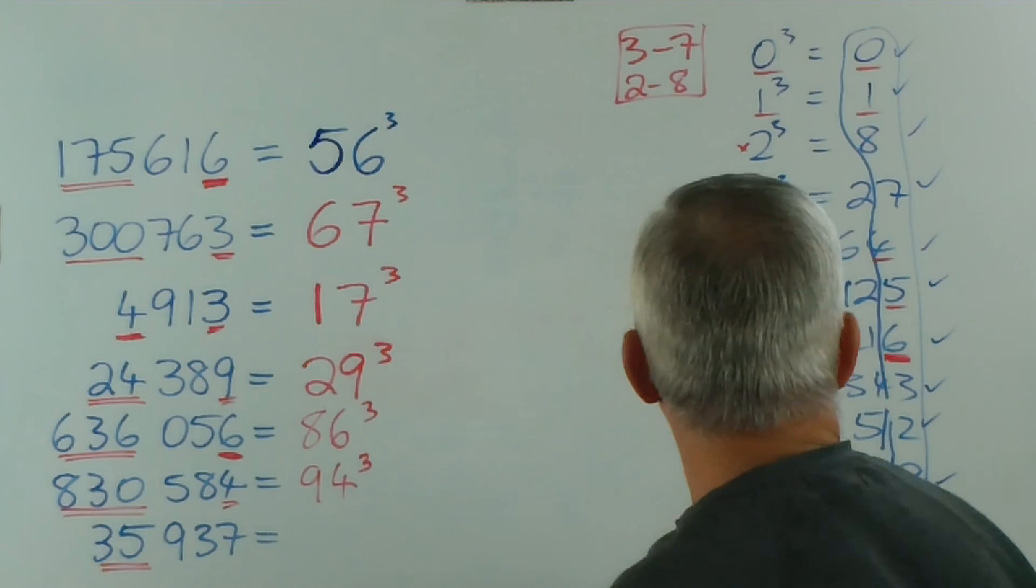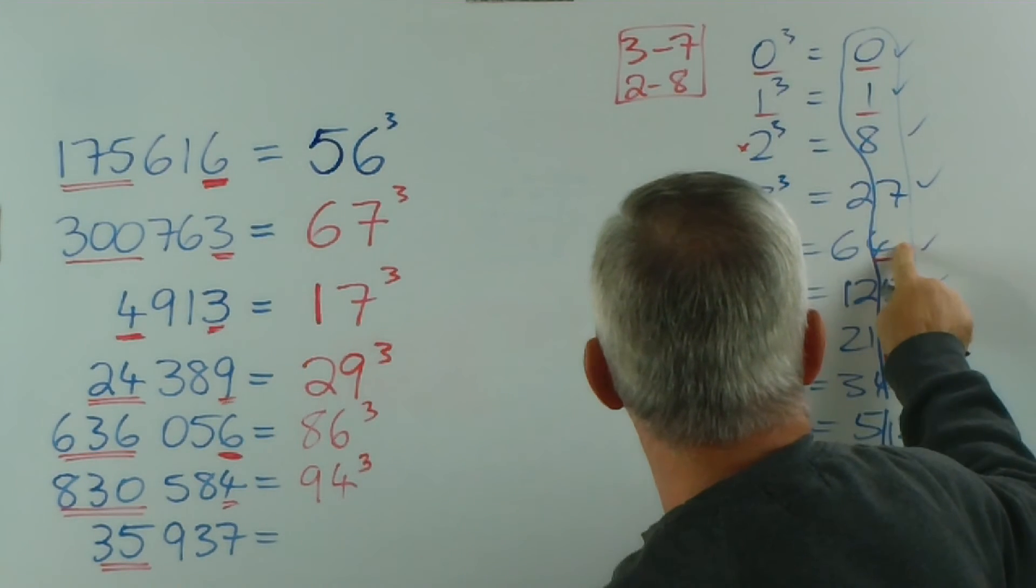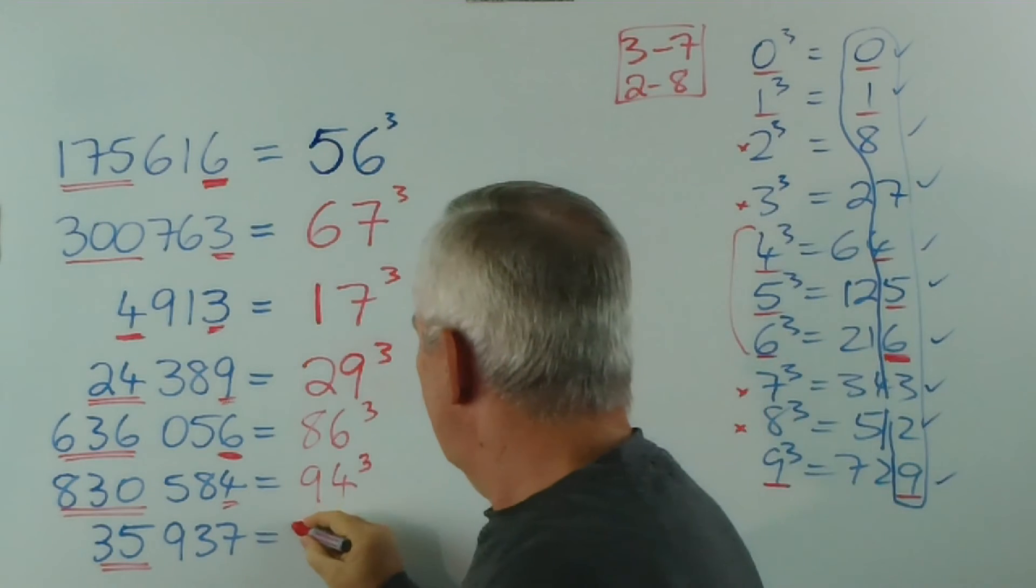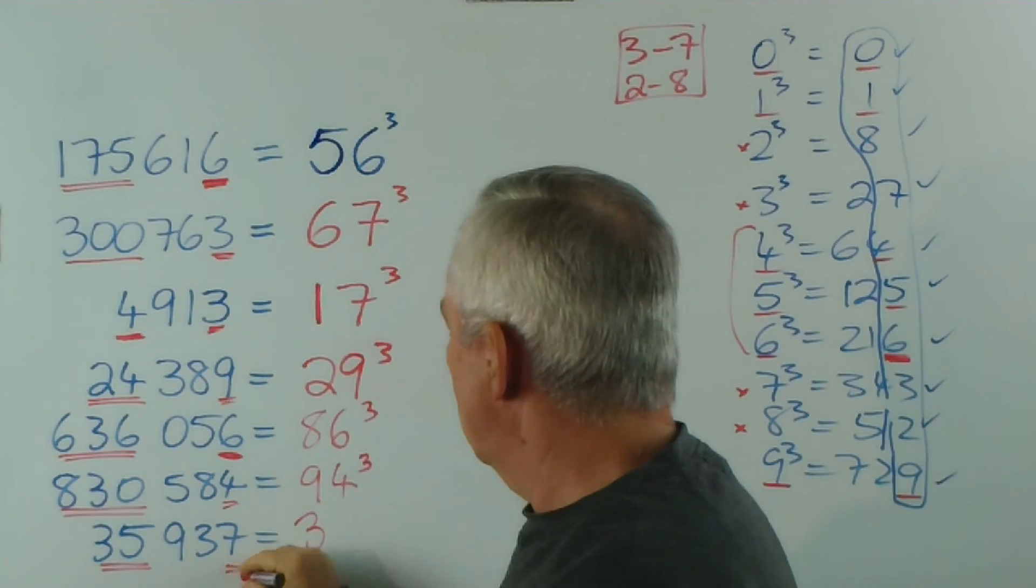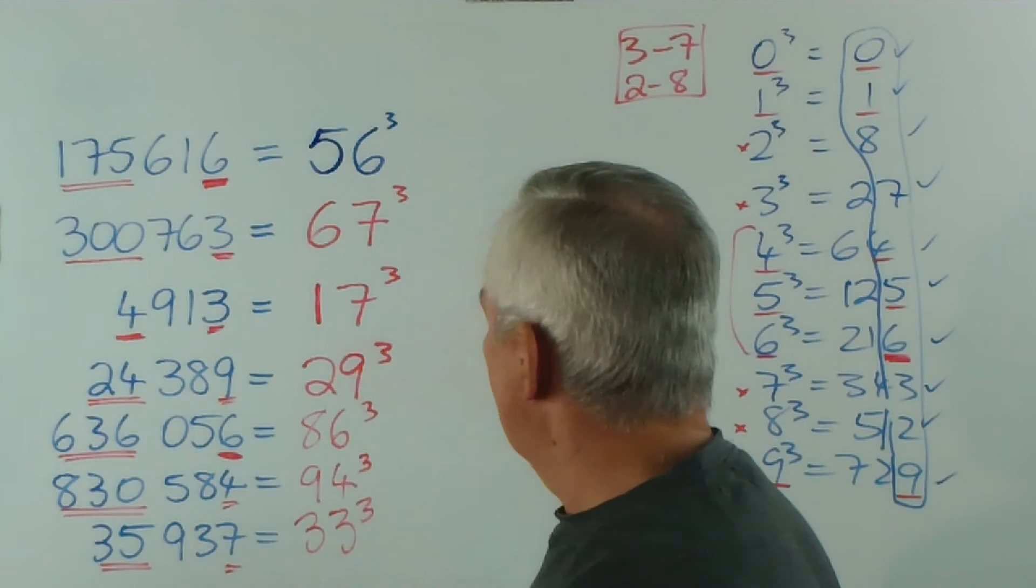And, the very last one, thirty-five. It's here, between twenty-seven and sixty-four, so it's three. Ends in a seven, so it's one of our seven-three pair. So, that's thirty-three cubed.